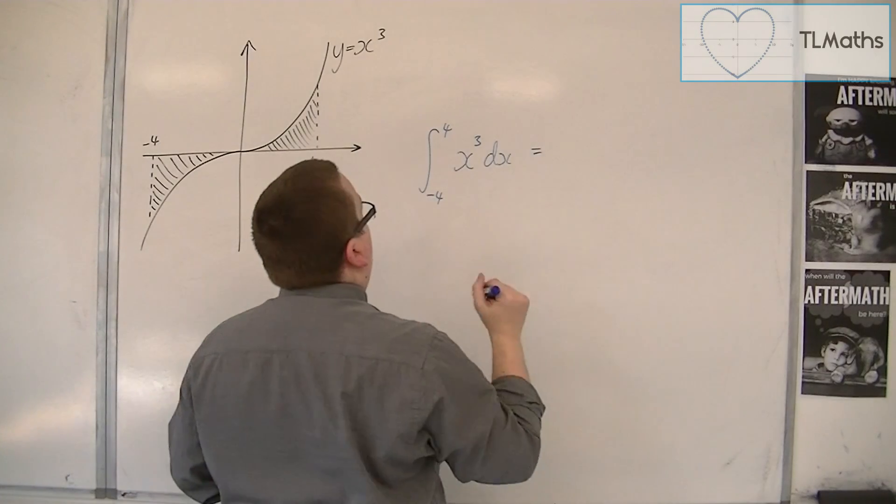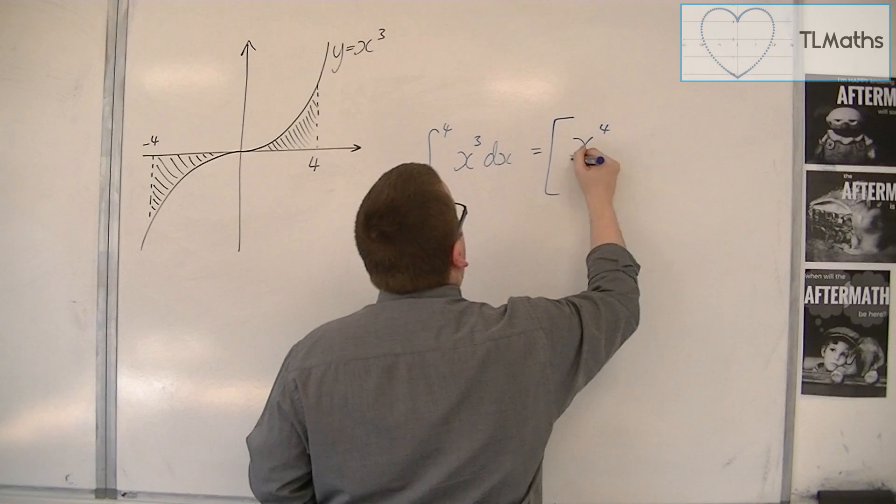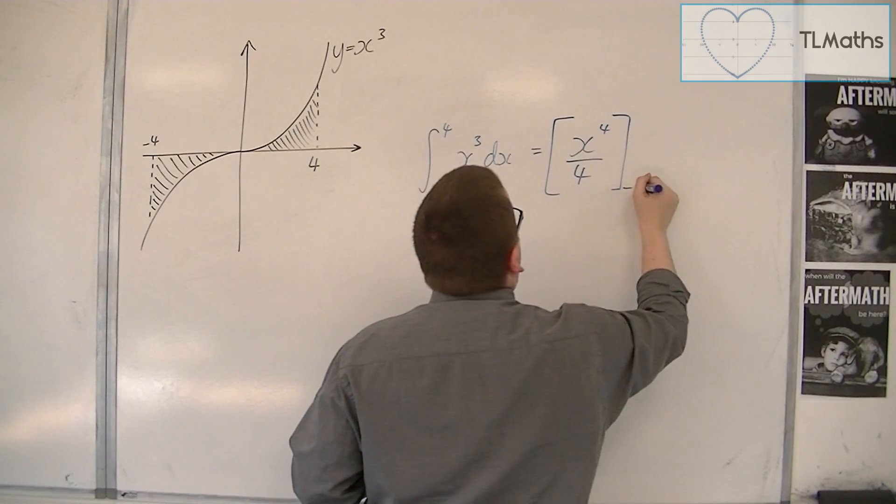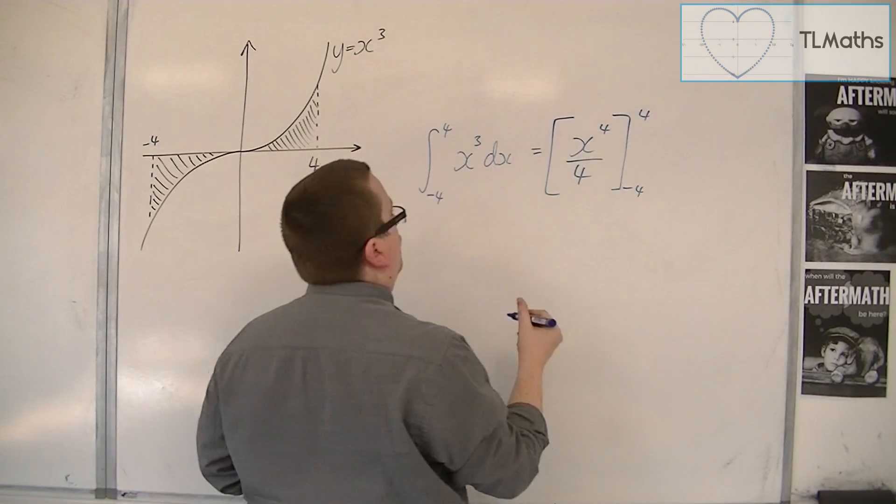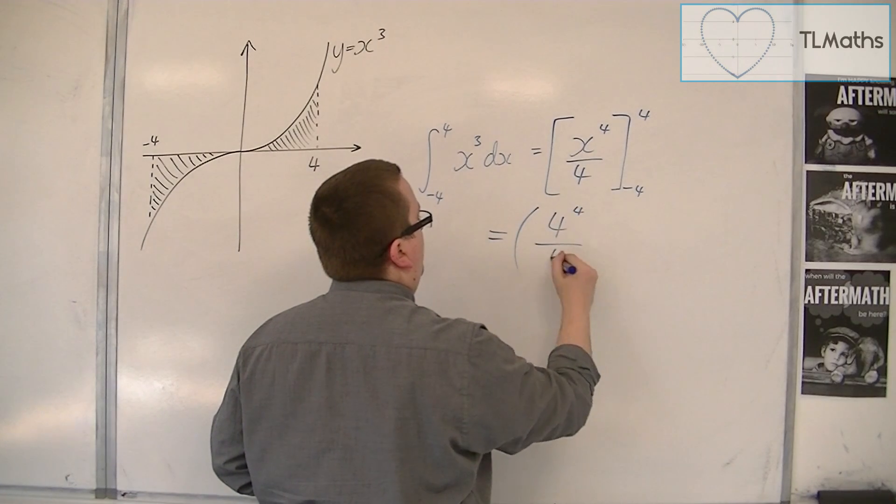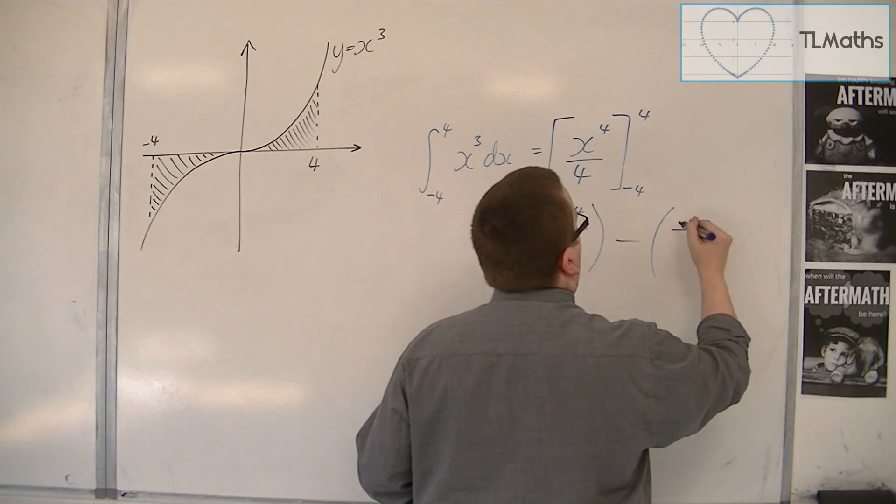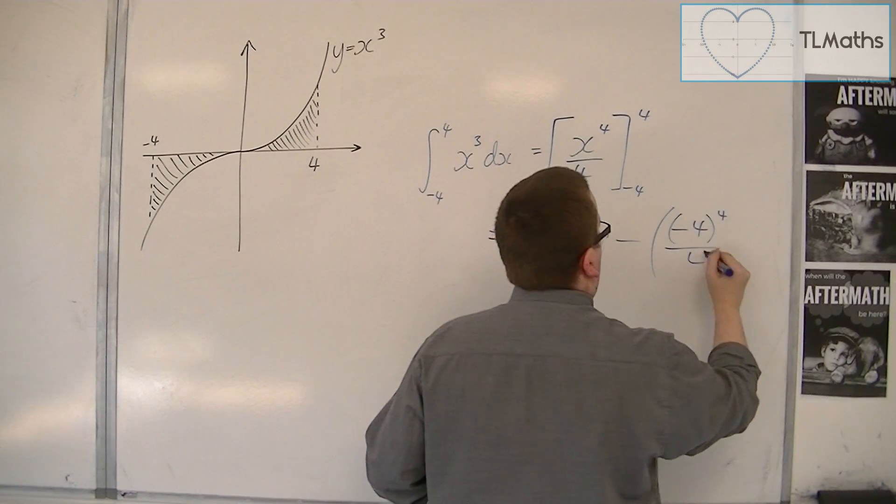So I would then evaluate this, add 1 to the power, divide by the new power and substitute in minus 4 and 4. So substituting in 4 I get 4 to the 4 over 4, take away minus 4 to the 4 over 4.